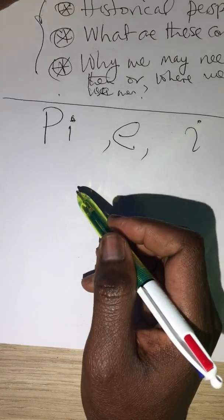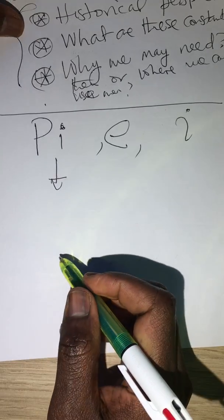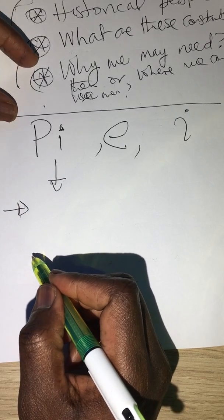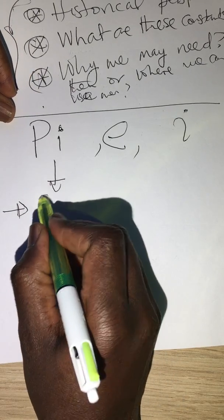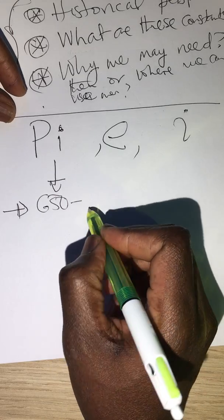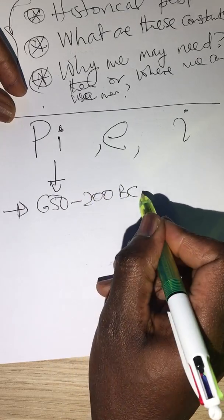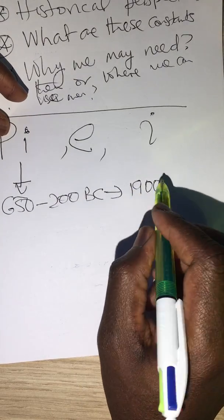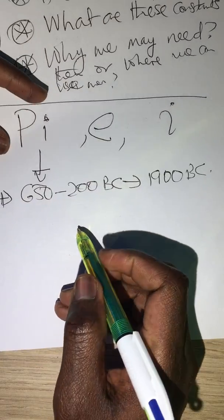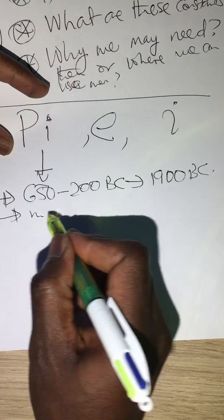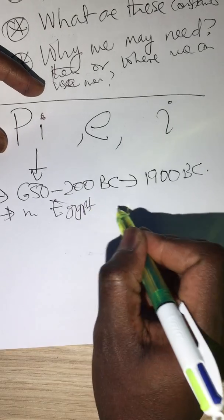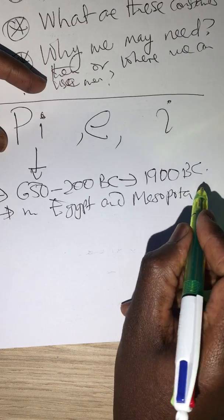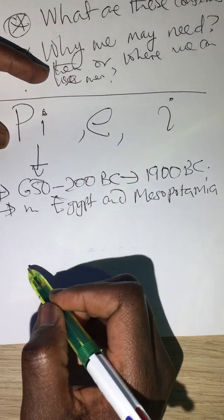So let us start by looking at pi. Pi was actually discovered sometime back, I would say between 650 to 200 BC, but it became well known in the 19th century BC. It was discovered actually in Egypt and Mesopotamia.